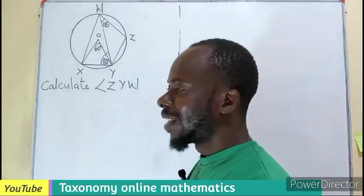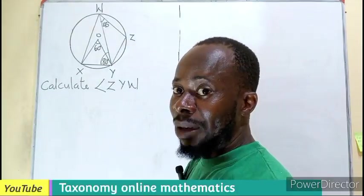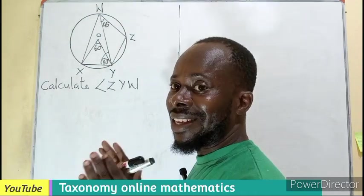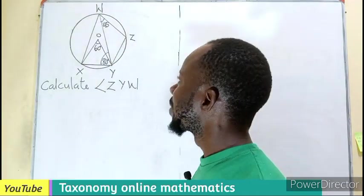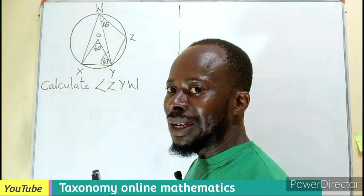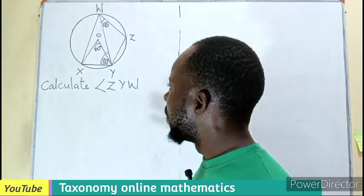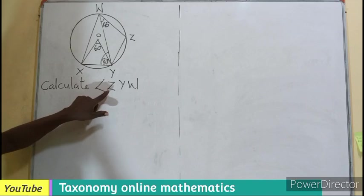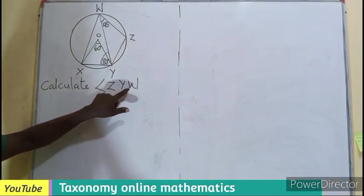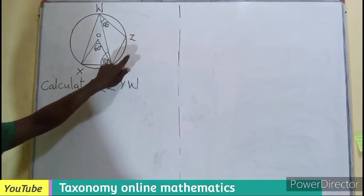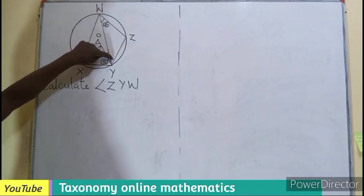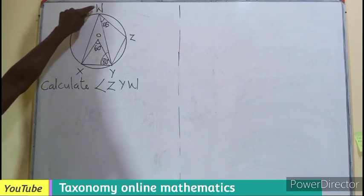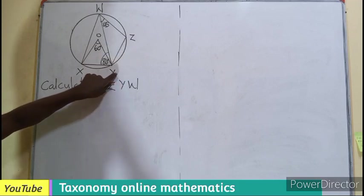Let's see how we can provide the answer to this. It has been on the timeline for some time. So this is a circle theorem question. We need to bring out all the properties we can remember before we can get the answer. What we are looking for is the angle ZYW. This very angle, which is part of the triangle WZY.